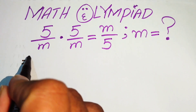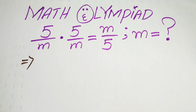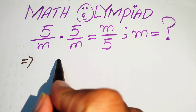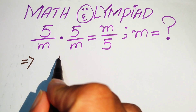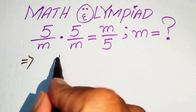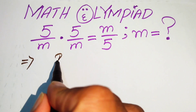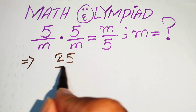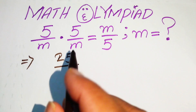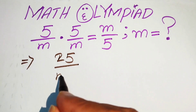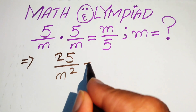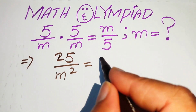The very first step is to multiply: 5 times 5 becomes 25, and m times m becomes m squared. So we get 25/m² equals m/5.